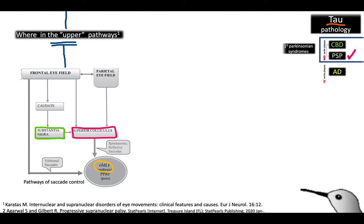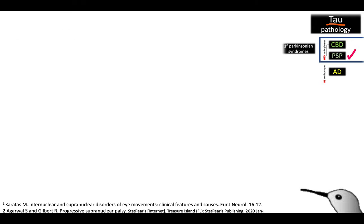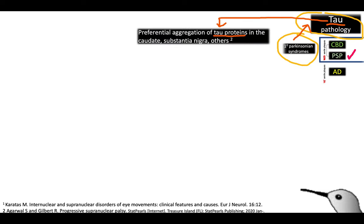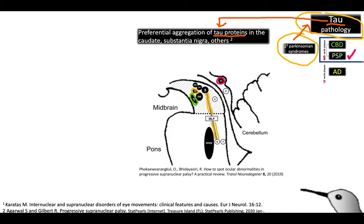PSP is due to a tau pathology. These tau proteins are resistant to proteolysis and form neurofibrillary tangles. They preferentially aggregate in several structures: the substantia nigra (shown in green), the superior colliculus (in pink), and the nucleus of the MLF (in yellow).